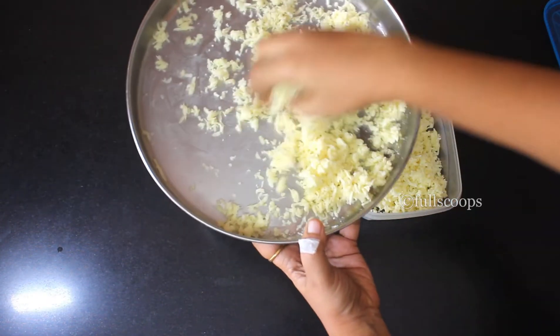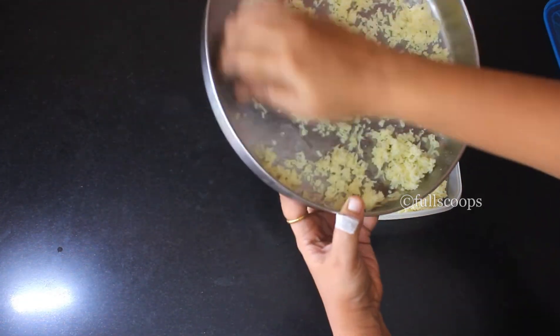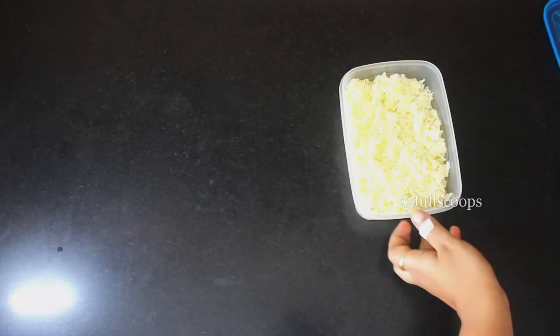So once you have coated it with corn flour, transfer it to a freezer-safe box or any storage box that you have at home, and then you can leave it in the freezer as you normally store cheese.